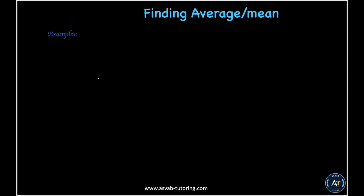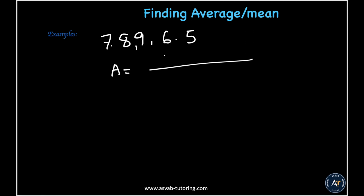The first thing we learn is average or mean. Let me write a few numbers and try to find the average. Say 7, 8, 9, 6, and 5. Average and mean are the same thing. To find the average, add them up: 7 plus 8 plus 9 plus 6 plus 5, then divide by the count. We have 1, 2, 3, 4, 5 numbers, so divide by 5.